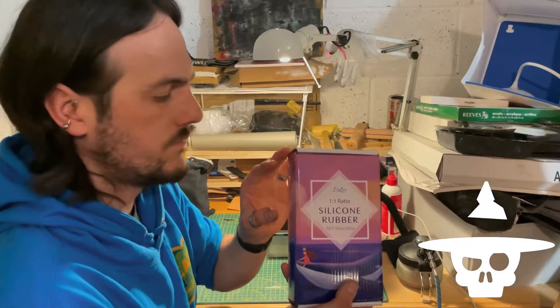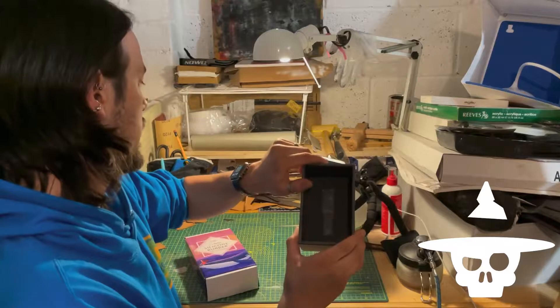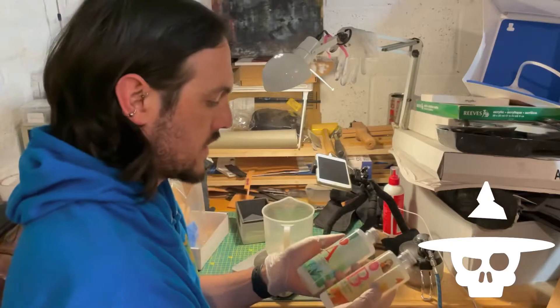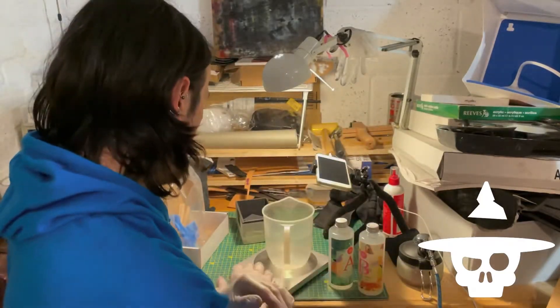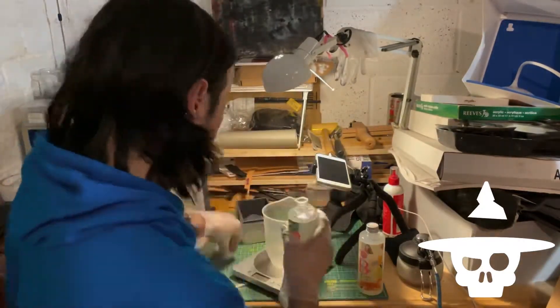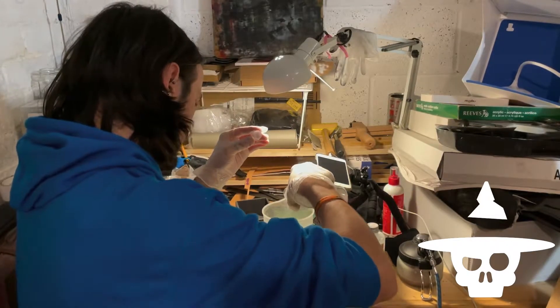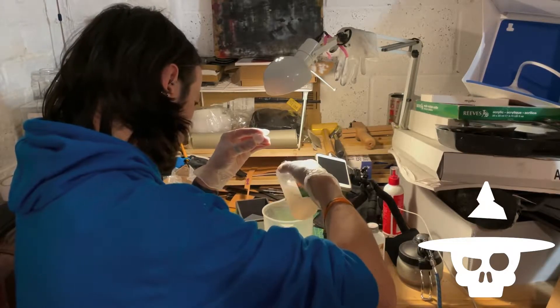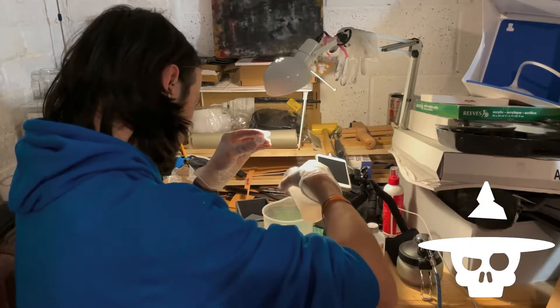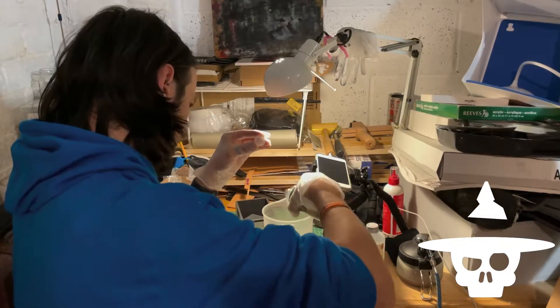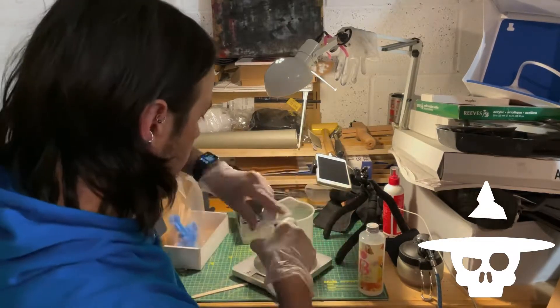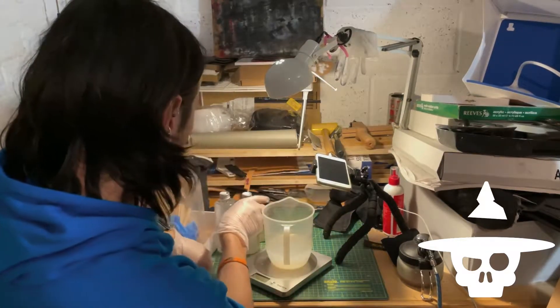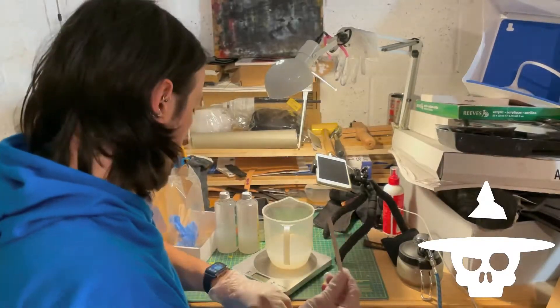I've got some silicon and I've got a mold box to put it in. So first step is to mix equal parts A and B, and then I need to mix them for like three minutes.